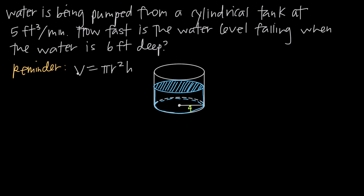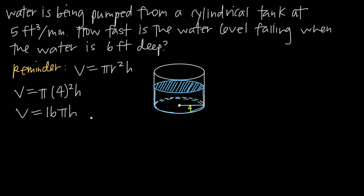We want to simplify this equation. We have V = πr²h, and from the diagram the radius of this cylindrical tank is 4. Plugging that in, we get V = π(4²)h. Since 4 squared is 16, we can say V = 16πh. So now we have water volume on the left and water height on the right.